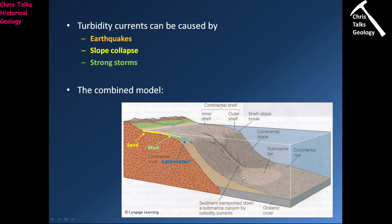The final option is strong storms. We've already discussed how the sand-rich inner portion is constantly being churned up by tides and waves. The mud-rich, low-energy outer portion is a more stable environment; however, every once in a while, a big storm will come through. This will mean the water at the edge of the continental shelf, which is normally nice and peaceful, will start to get churned up, encouraging material to move across the shelf and flow down the continental slope. So turbidity currents tend to be caused by earthquakes, slope collapse, or strong storms.